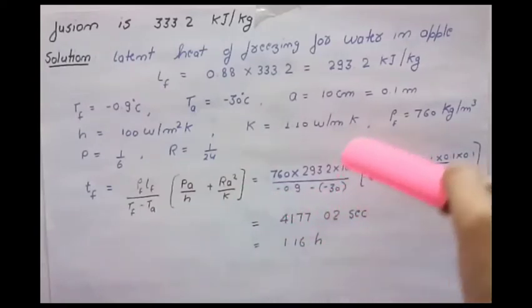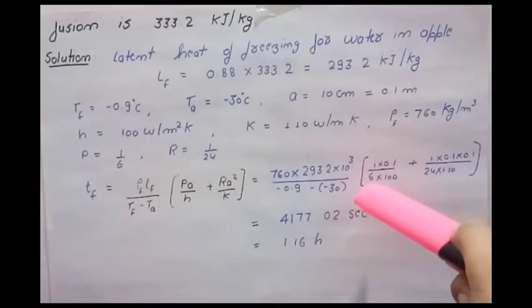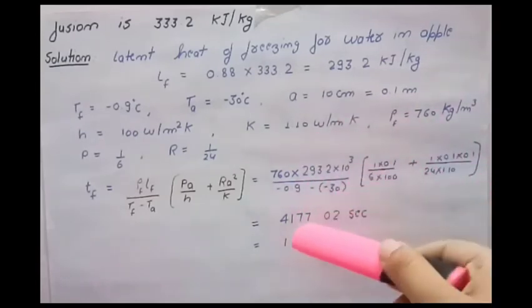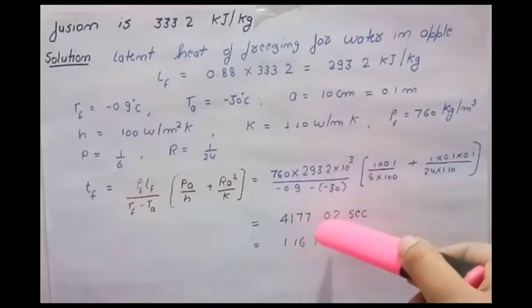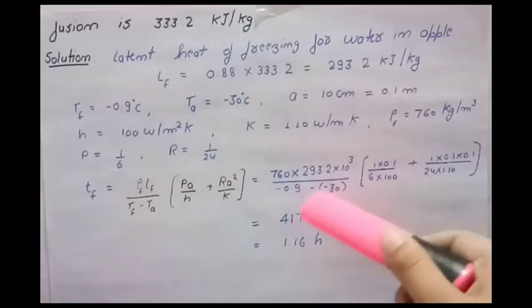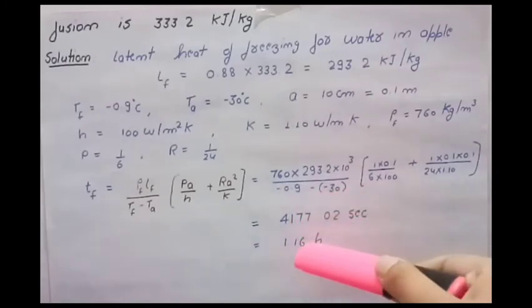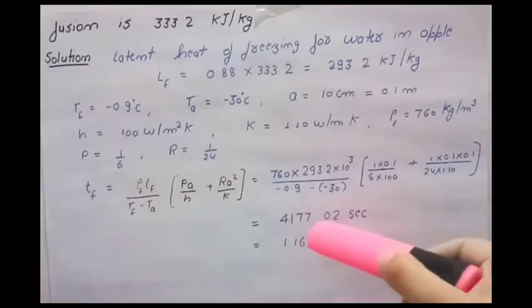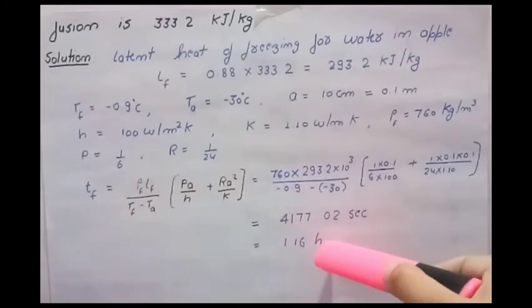1/6 is the value of P, a is 0.1, h is 100, 1/24 is the value of R, a is 0.1, and 1.10 is the value of K. After solving this equation we get 4177.02 seconds. We have to convert the seconds into hours, so the actual answer is 1.16 hours. The total time taken for freezing an apple is 1.16 hours.